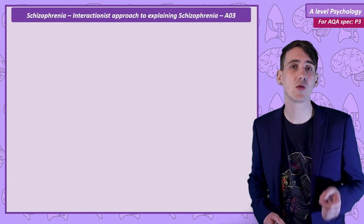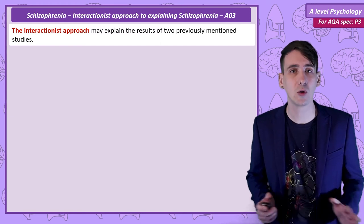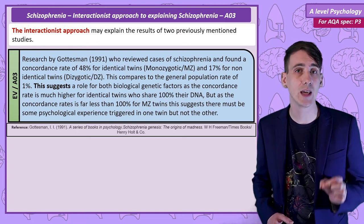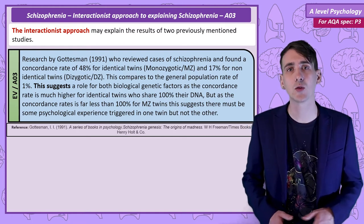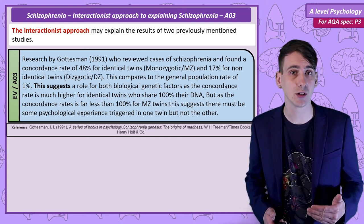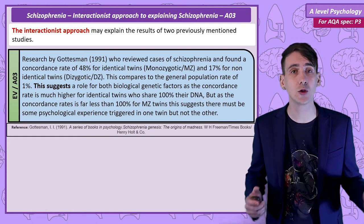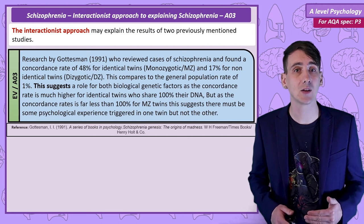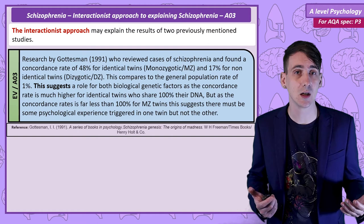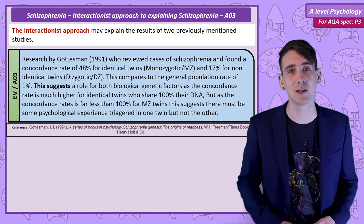Interestingly, this interactionist approach to explaining schizophrenia can help us expand on two evaluations we have already used in this unit. The Gottesman family study showed a 48% concordance rate in monozygotic twins — twins with 100% of the same DNA. This is highly suggestive of a genetic origin, but if the disorder was entirely genetic we should observe 100% concordance. These results can be explained by the diathesis-stress model: both twins share the vulnerability, but only one has the negative psychological experiences needed to actually trigger the disorder.